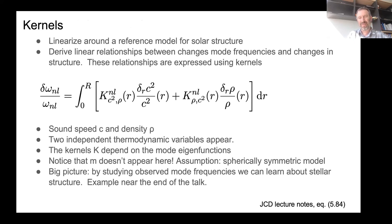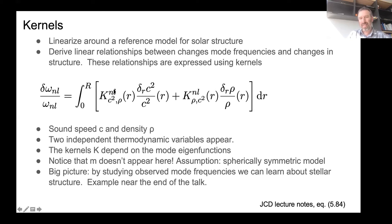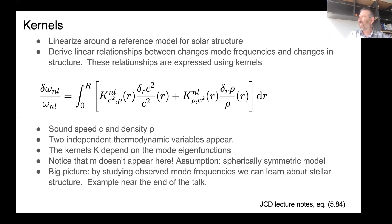You can linearize around the reference model. You end up with equations that say: if I make some small change in C-squared at fixed R and a small change in the density, those changes result in some change in the mode frequencies — and this linear relationship is expressed through kernel functions K. These kernels depend on the reference model and on the eigenfunctions of the mode, so they're fixed properties of the reference model. This is the forward problem: if I make a little change in C-squared and a little change in rho, how does it change my mode frequencies?